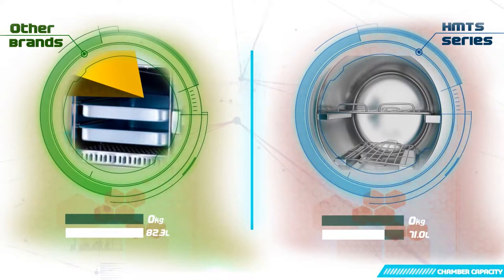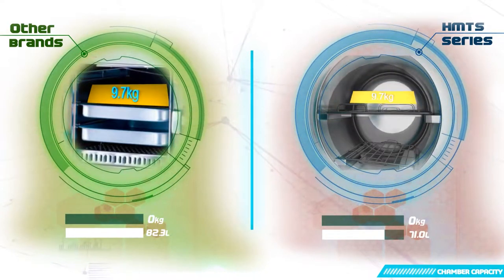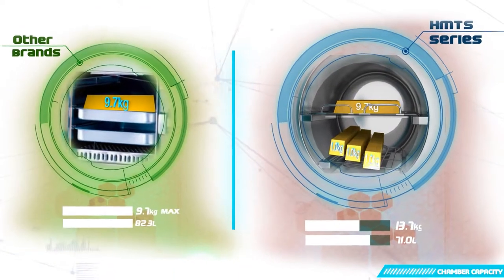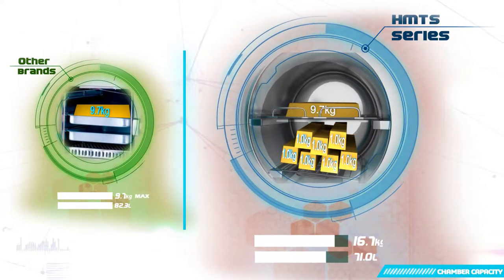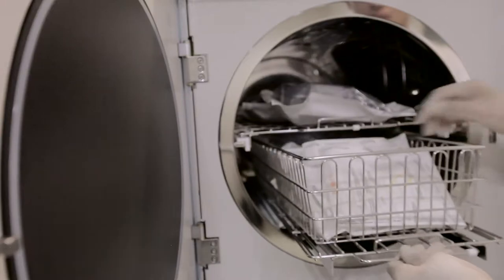With a 90% increase in chamber capacity, perfect sterilization is guaranteed even when the chamber is almost filled, resulting in an improved turnover rate of expensive devices. Unlike the HMTS, other plasma sterilizers are bounded by weight, limiting the actual capacity of the chamber.